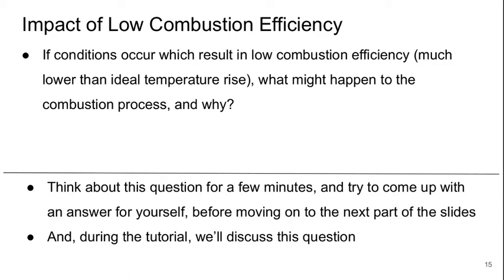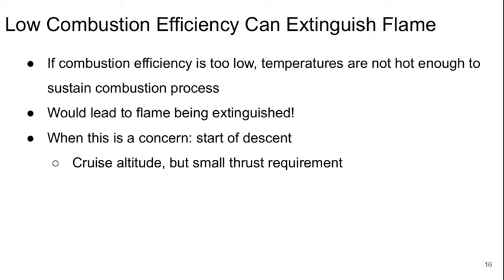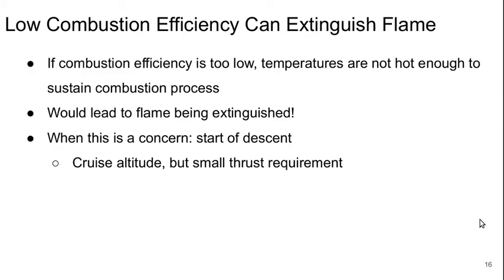We left off with this question of what would happen if we suddenly had a drop in combustion efficiency. The answer is this could make the flame become extinguished. If the combustion efficiency is too low, the temperatures would not be hot enough to sustain the combustion process, so this could lead to the flame being extinguished. The flight condition where this is actually a concern is at the start of the descent.